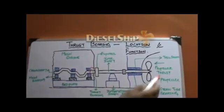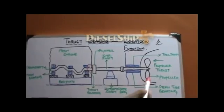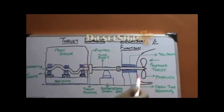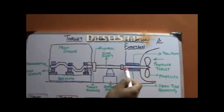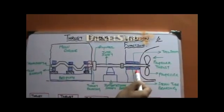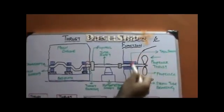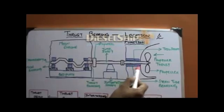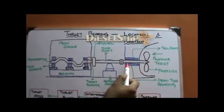Let us assume this to be the aft portion of the ship. We have the propeller here, marked as 'propeller.' The propeller shaft or tail shaft comes inside the ship through the stern tube bearings. The propeller or tail shaft is marked here, and the blue shaded portion represents the stern tube bearings which support the propeller shaft.